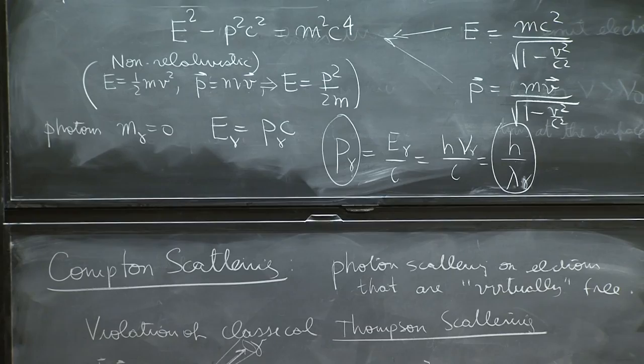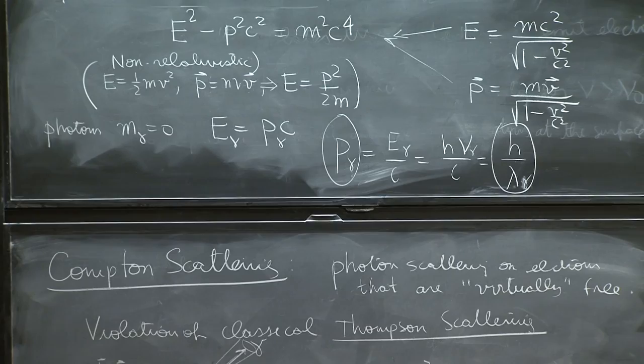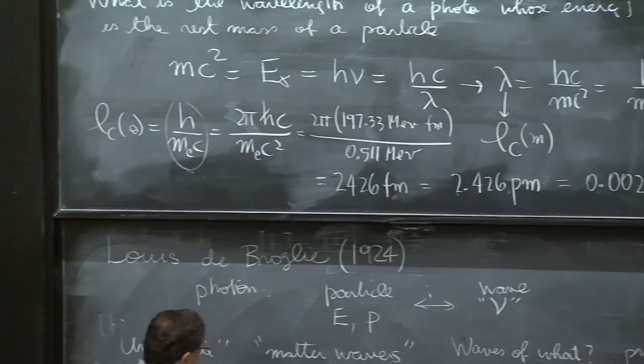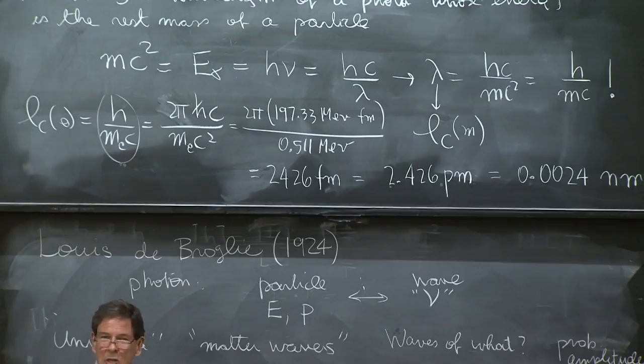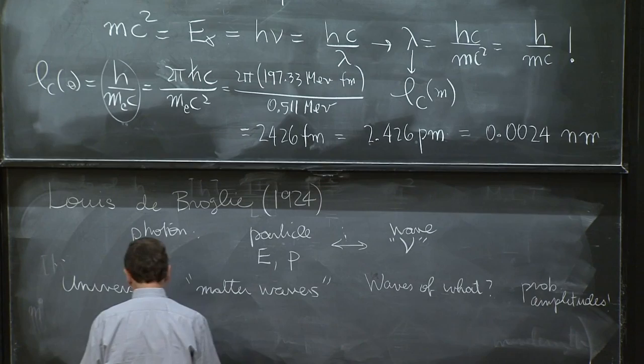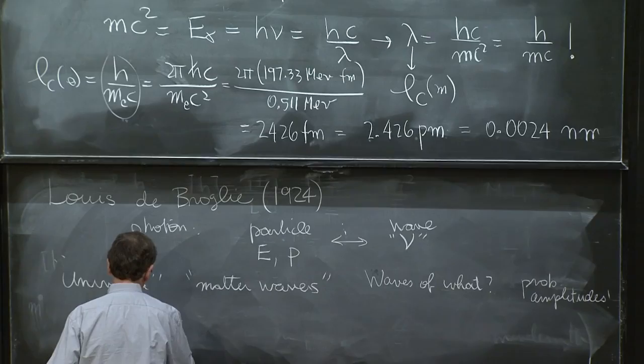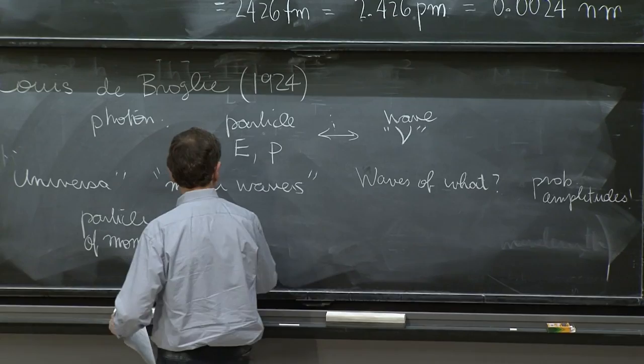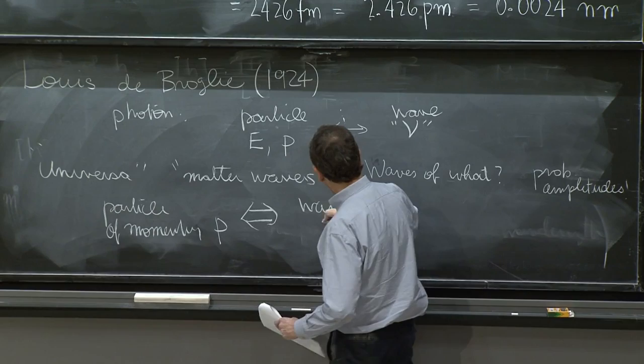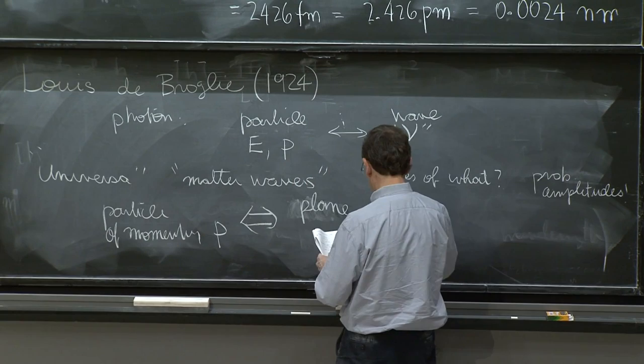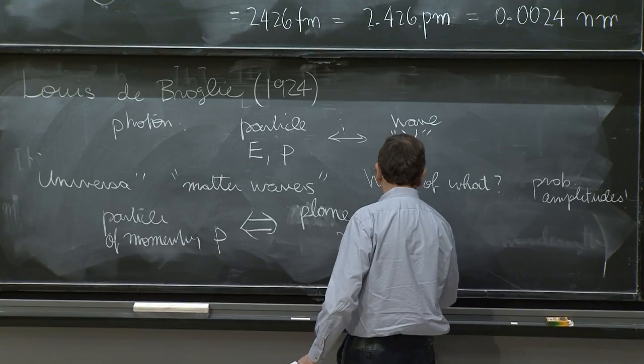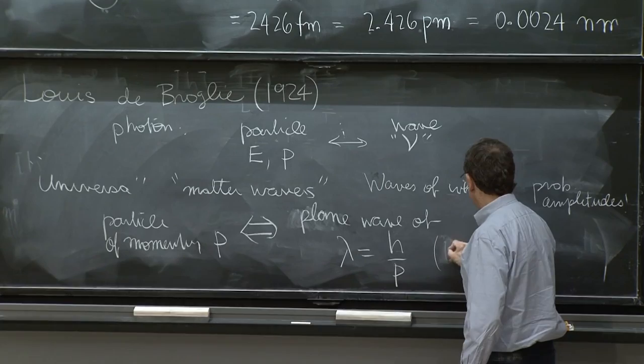So remember, the Compton wavelength was a universe. For any particle, the Compton wavelength is just one number. But just for photons, the wavelength depends on the momentum. So in general, it should be dependent on the momentum. So we say that for a particle of momentum P, we associate a wave, a plane wave, in fact, a plane wave. So we're getting a little more technical, with wavelength λ equal h over P, which is the de Broglie wavelength.